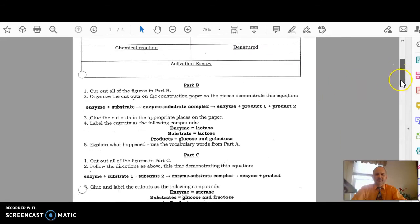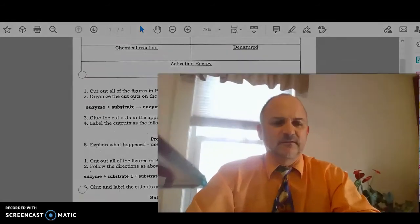We'll get down to part B, and it says cut out all the figures in part B. If you haven't done that yet, pause the video and go and do that. I have, and I'm going to move the cutouts in a certain order: enzyme plus substrate, enzyme-substrate complex, enzyme plus product 1 plus product 2. So what's that going to look like?